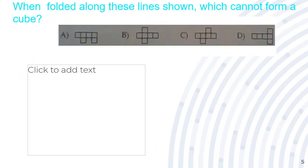This next one is: when folded along these lines shown, which cannot form a cube? So, all of these have 6 cubes, so they all have a chance.